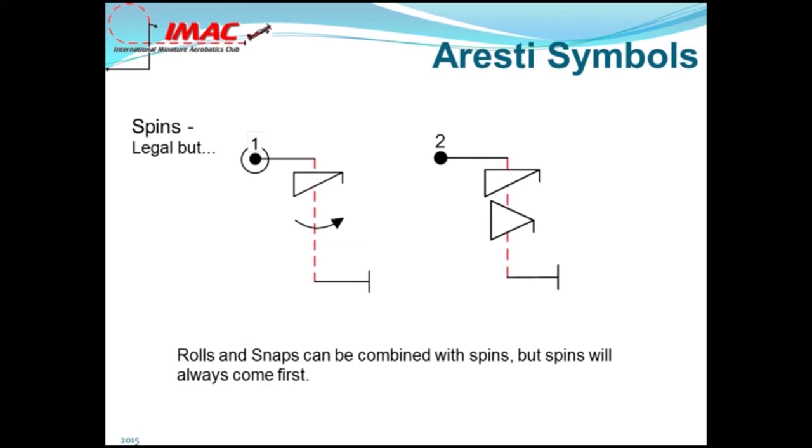Rolls and snaps can be combined with spins, but spins will always come first. When combining a roll or a snap, a brief and perceivable pause is required between the spin and the roll element. No centering criteria for a roll after a spin.